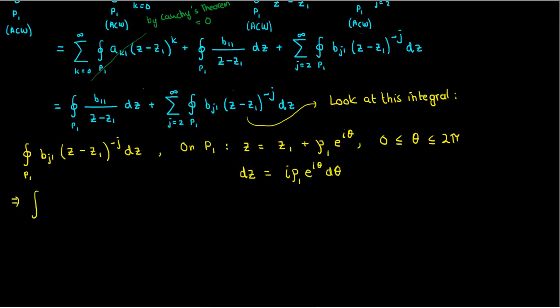Because of this I can write my integral as the integral from 0 to 2π of b sub j1 over ρ1 times e to the iθ to the power j times ρ1 times i times e to the iθ dθ. I can simplify this expression to leave myself with only a single exponential. So I get b sub j1 times i over ρ1 to the j minus 1 times the integral from 0 to 2π of the exponential of negative i times j minus 1 times θ dθ.